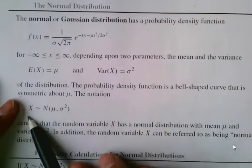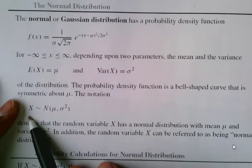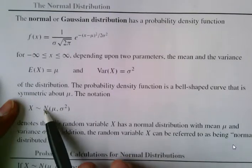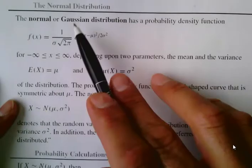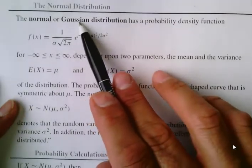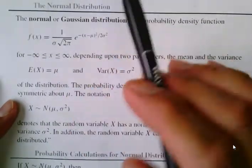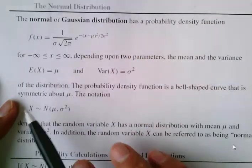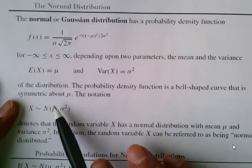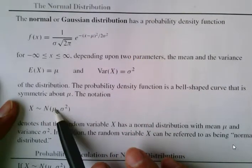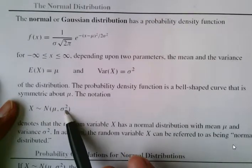This is the way we indicate that X follows a normal distribution, which is also called a Gaussian distribution, but most cases we just call it a normal distribution. So when we say X follows a normal distribution with mean mu and variance sigma squared.